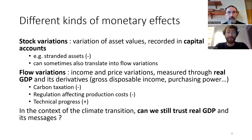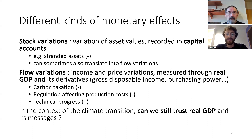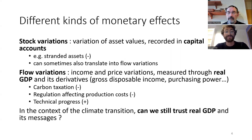What kind of flow variations can we expect? Variations of prices through, for instance, carbon taxation — public policies which could tax pollutant goods — but also regulation that could affect production costs and increase prices. And on the good side, technical progress, which might help reduce prices of green substitutes. The question we'll answer in this first section is: can we still trust the messages of real GDP in the context of the climate transition?